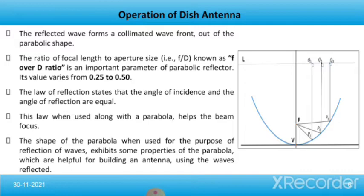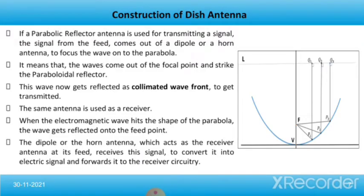The law of reflection states that the angle of incidence and the angle of reflection are equal. This law, when used along with a parabola, helps the beam to focus. The shape of the parabola exhibits properties helpful for building an antenna using reflected waves. If a parabolic reflector antenna is used for transmitting a signal, the signal from the feed comes out of a dipole or horn antenna to focus the wave onto the parabola. The waves come out of the focal point and strike the parabolic reflector, which then gets reflected as a collimated wave front to be transmitted.